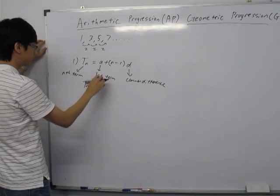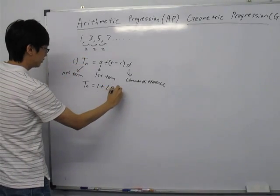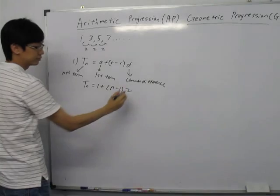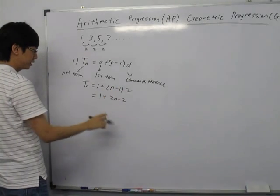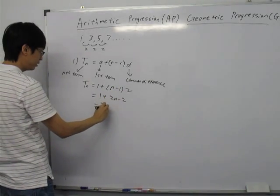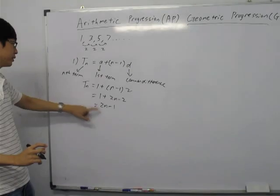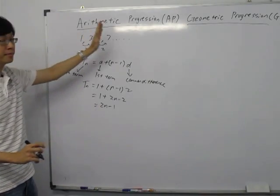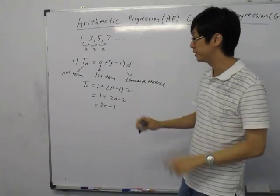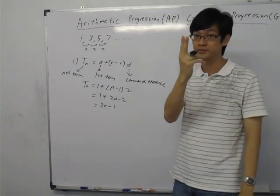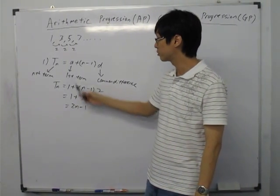Let's find the N-th term for this AP by substituting in. TN equals my A which is 1, plus (N minus 1) times my D which is 2. So I get 1 plus 2N minus 2, which simplifies further to 2N minus 1. This is the N-th term. N-th term is the general form for every term in the AP. Say for example I want to find the second term — I sub N equals to 2, so 2 times 2 gives 4, and 4 minus 1 gives 3.